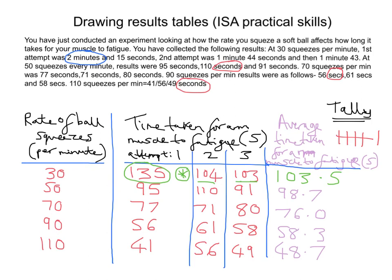So there we have it — that is how you would draw a results table for an ISA practical. Six key things to remember. Number one: you need the independent variable fully described in the left column heading. Two: units only in the column heading. Three: the dependent variable fully described in the right column heading. Four: the numbers in ascending order and at least five data sets. Five: the average is given to the correct number of significant figures. And number six: anomalous data omitted from the calculation, especially if you're looking at averages. So that's how you would put together this results table. Hope all that helps.